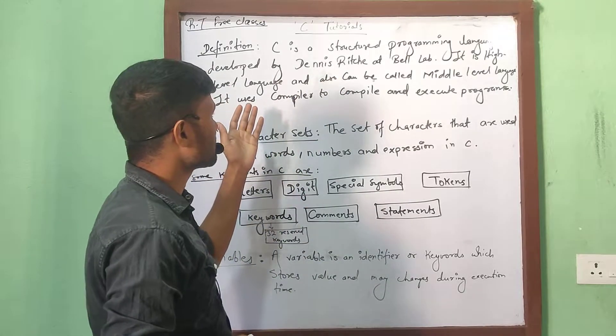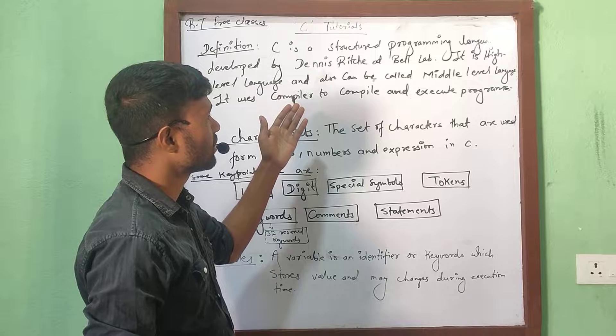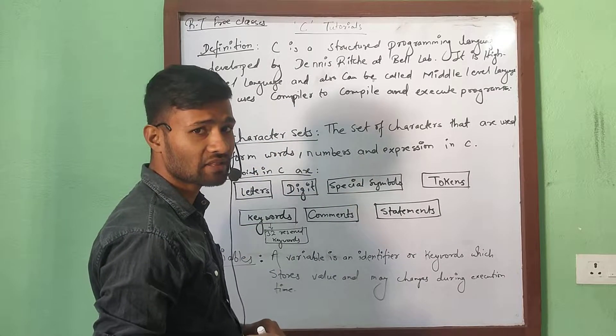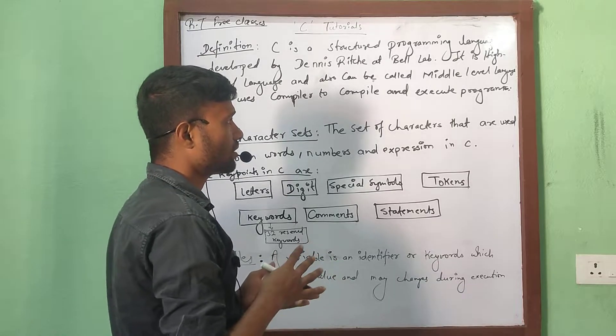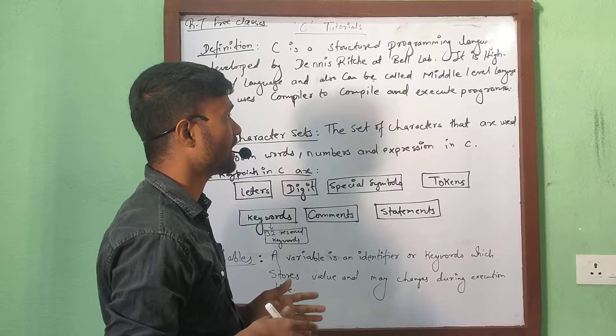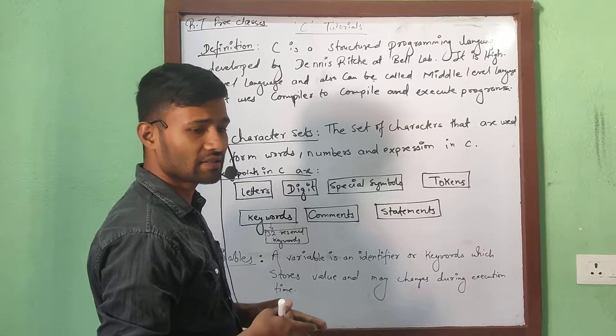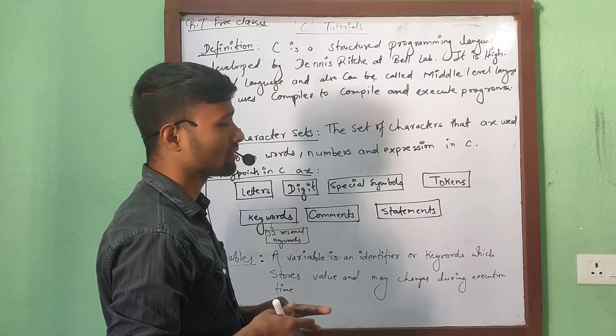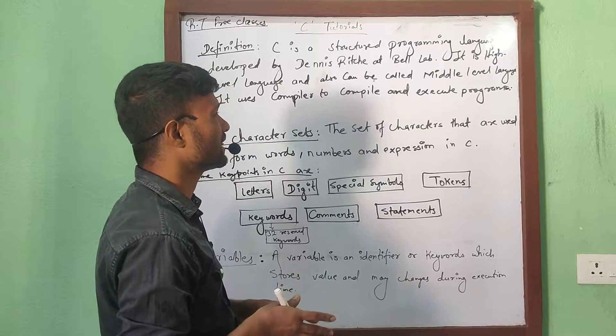C is a structured programming language developed by Dennis Ritchie. Dennis Ritchie developed it at Bell Lab. It is a high level programming language and also can be called as middle level language. Why middle level language? Because when it was developed, before it QB6 programming language was developed, and again, hence C++ was developed. So it comes to middle and hence we can call it as middle level language.